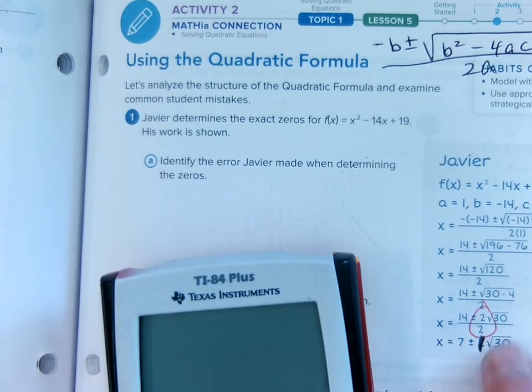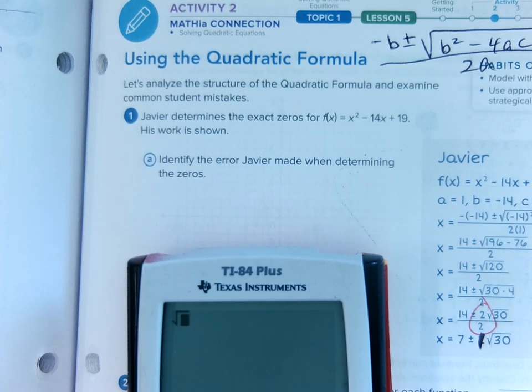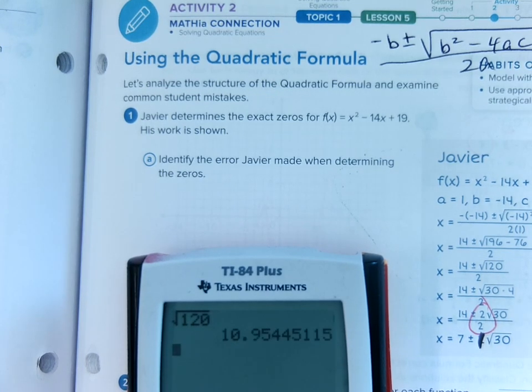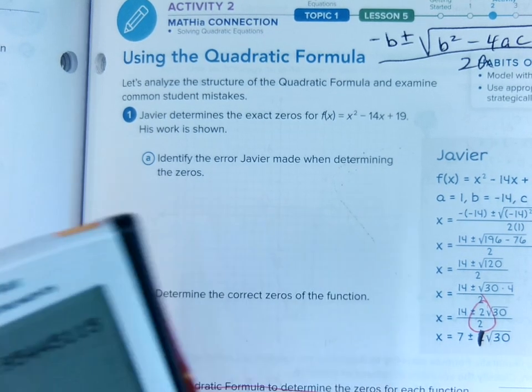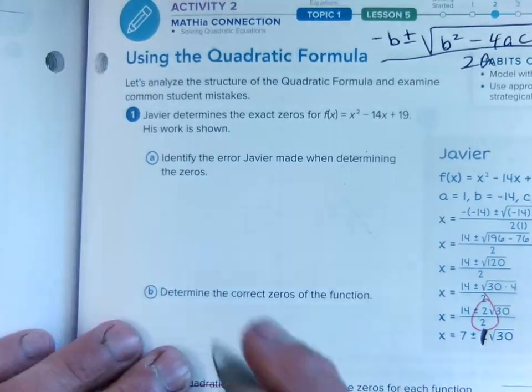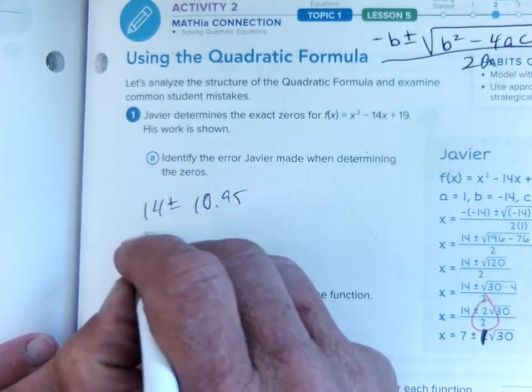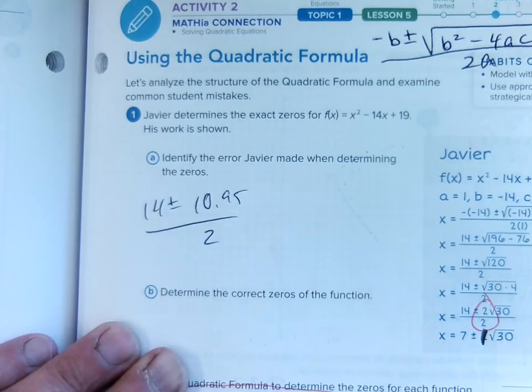So let's actually do it, let's take the 120, so I take the square root of 120 and I get a decimal, I have about 10.95. So we have about a 10.95 for the square root of 120, so we've got 14 plus or minus about 10.95 over 2.